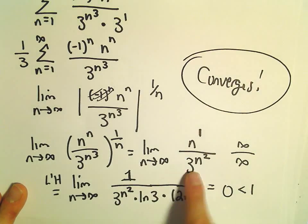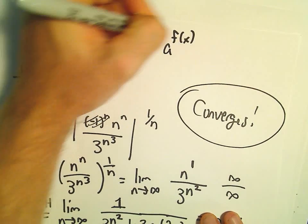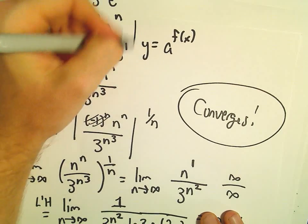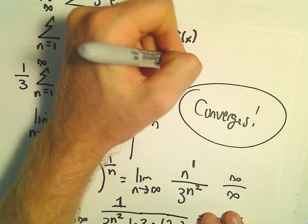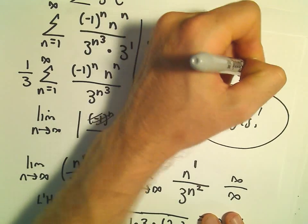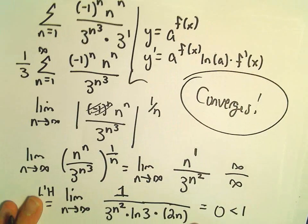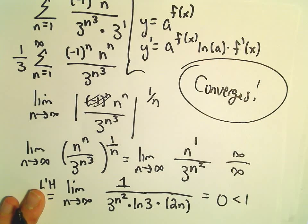So again, down in the bottom, all I'm using is the formula a to the f of x. If we have a raised to something, the derivative of that is a raised to the f of x times the natural logarithm of a times f prime of x. That's how I'm getting, again, the derivative of the bottom, just in case you've forgotten this little formula.